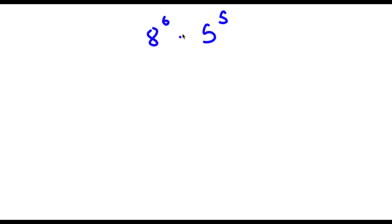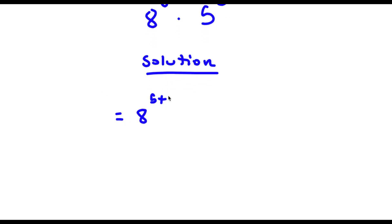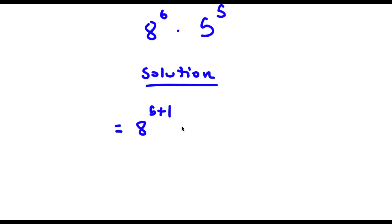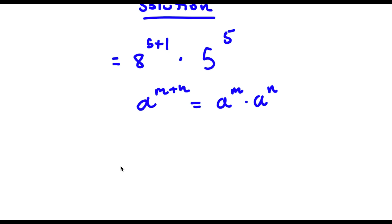Alright, so I have 8 to the power of 6 times 5 to the power of 5. For my solution, 8 to the power of 6 can be rewritten as 8 to the power of 5 plus 1, because 6 is the same thing as 5 plus 1. So now I have 8 to the power of 5+1 times 5 to the power of 5. Using the rule a^(m+n) = a^m × a^n, 8^(5+1) equals 8 to the power of 5 times 8 to the power of 1, times 5 to the power of 5.